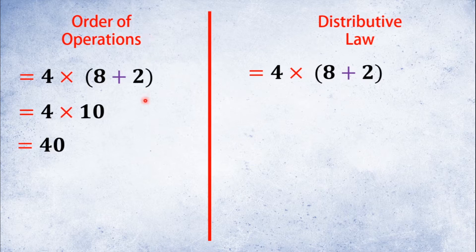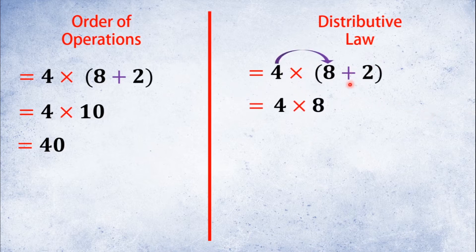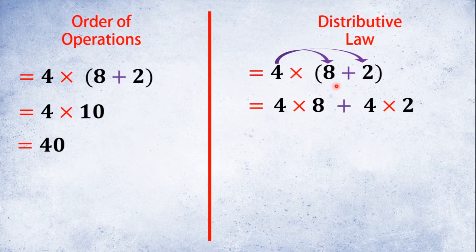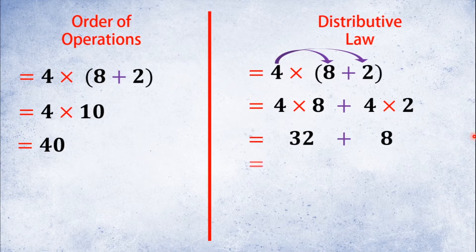So we have to do the order of operations — distribute. We have to do the parentheses, then distribute by the factor. So we have 4×8. We have to do the addition as well. We multiply 4×2, and then distribute to each member. Do the multiplication and add the addition. So 4×8 is 32, and 4×2 is 8, and we have to add to get 40.